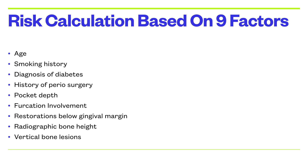Consider how increased age, habit of smoking, a diagnosis of diabetes, a person who has undergone peri-surgery, progressively increasing pocket depths, sites where furcations have been involved, restorations present below the gingival margin that require correction, and radiographic evidence of reduced bone height or angular bone lesions — all these factors are going to place that patient in a high risk category. This is all about assessing the risk when it comes to periodontitis, guiding you towards making the right decision about the course of action.